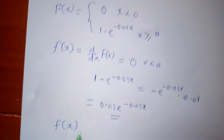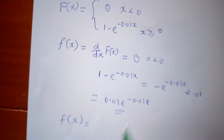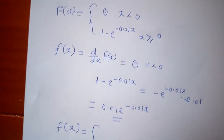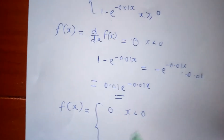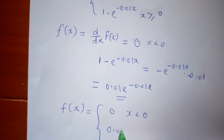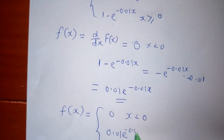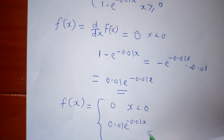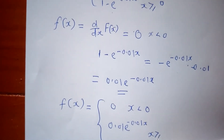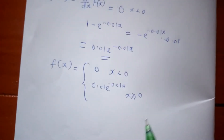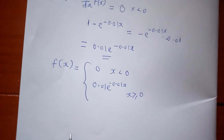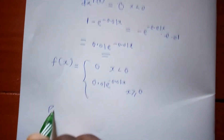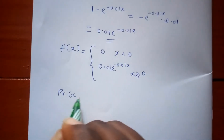So f(x) equals zero for x less than zero, and 0.01 e to the negative 0.01x for x greater than or equal to zero. Now let's look at finding the probability of x less than 200.